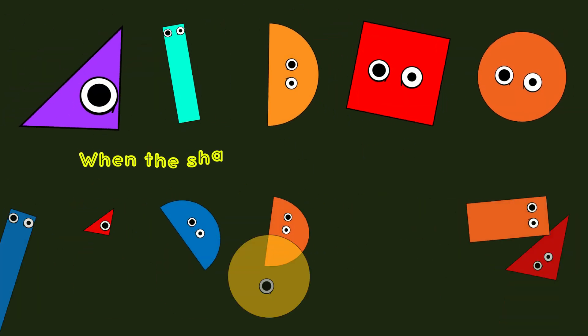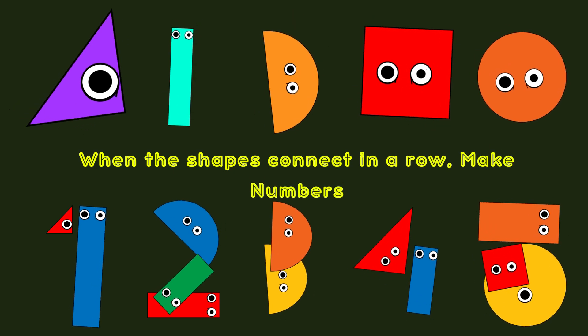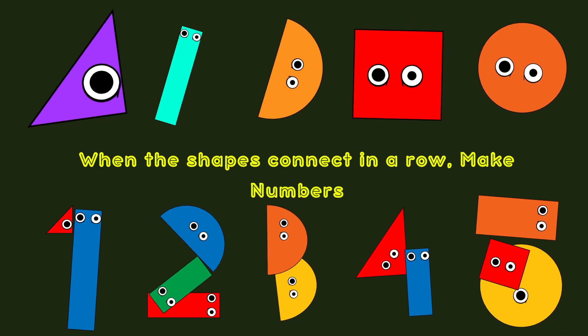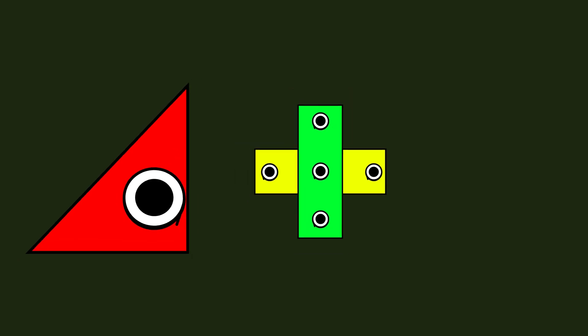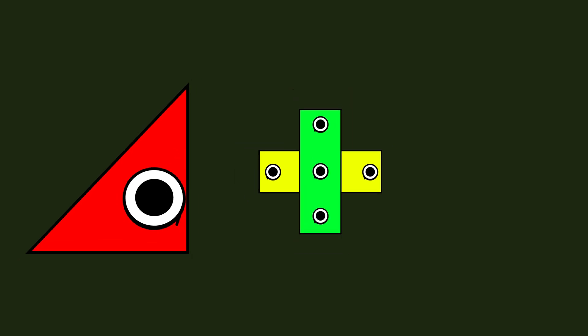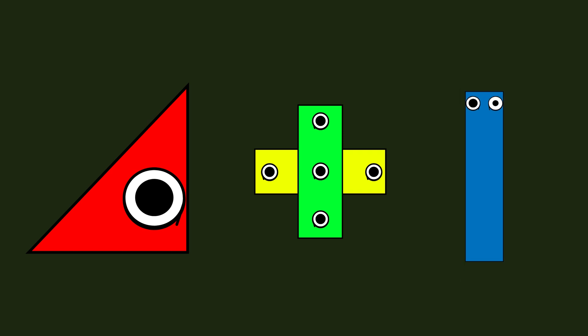When the shapes connect in a row, make numbers. Make number 1: triangle plus rectangle.